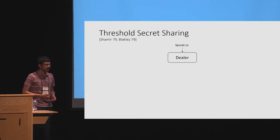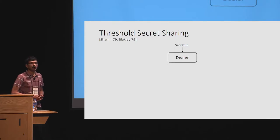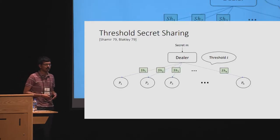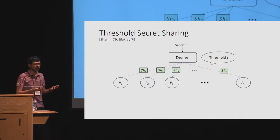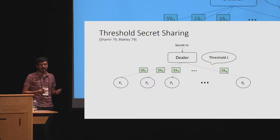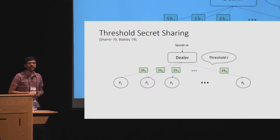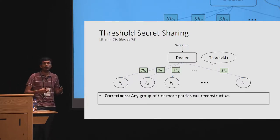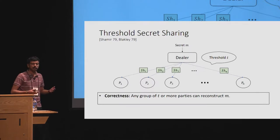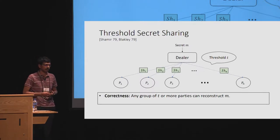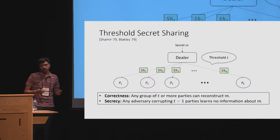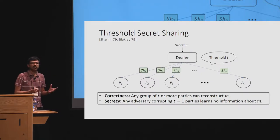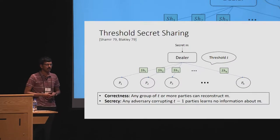In this setting, there is a dealer who has a secret message and wants to split it into n shares, sh1 to shn, with some threshold parameter t. The dealer then sends the i-th share, shi, to party pi.